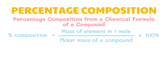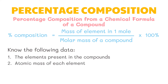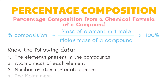From the given formula, you can get the percentage composition by knowing the following data: first, the elements present in the compound; two, the atomic mass of each element; three, the number of atoms of each element; and lastly, the molar mass.